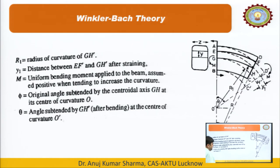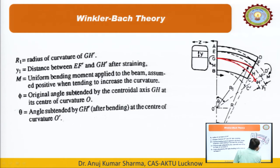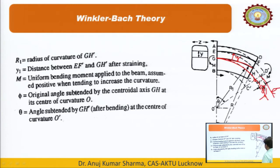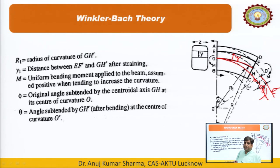Let Y1 be the distance between EF′ and GH′ after straining. Initially the fiber distance was Y; after straining it becomes Y1. At the end of the derivation we will put Y1 = Y, consistent with the radial strain negligibility assumption. M is the bending moment applied to the beam, assumed positive when tending to increase the curvature. φ is the original angle subtended by the centroidal axis, and after bending the angle changes to θ at the new center of curvature O′.